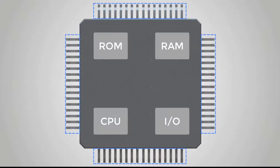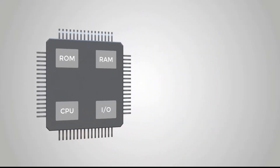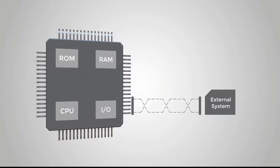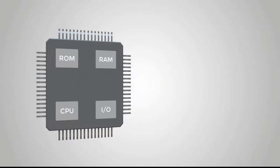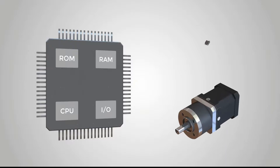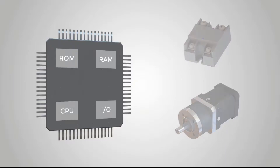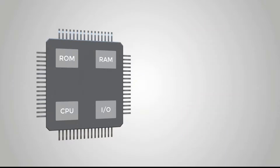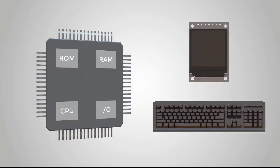The I/O interface is the interface between the microcontroller and the outside world. It can be used as a data interface such as reading and writing external memory. It can also be used as a control interface to output control commands, such as motor control and relay control. It can also be used as a human-computer interaction interface, such as screen display and keyboard input.